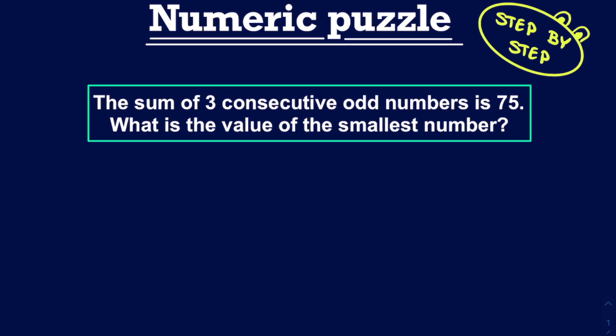Let's solve the following numeric puzzle step by step. The sum of three consecutive odd numbers is 75. What is the value of the smallest of these three numbers?